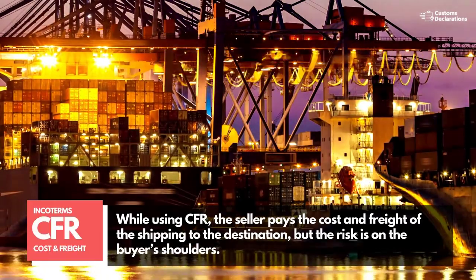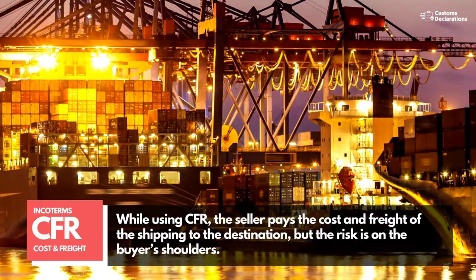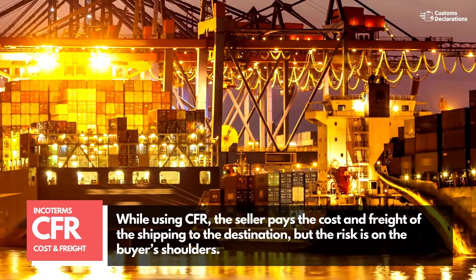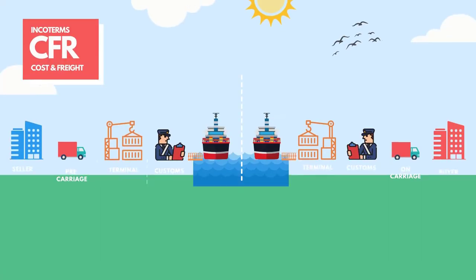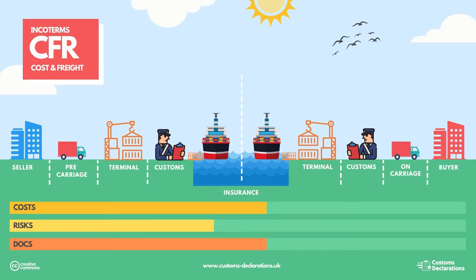While using CFR (Cost and Freight), the seller pays the cost and freight of the shipping to the destination, but the risk is on the buyer's shoulders. There is a significant variation between CFR and FOB: when cargo is delivered FOB, the seller transfers the risk to the buyer as soon as the package crosses the ship's dock. However, under CFR, the seller is also responsible for paying the expenses and freight until the cargo reaches its destination.